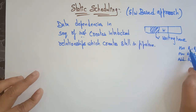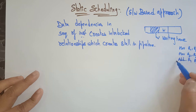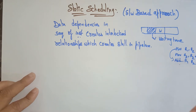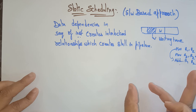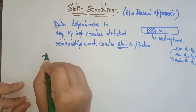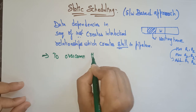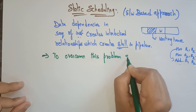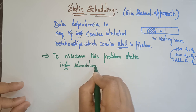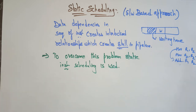Because R2 is being moved into R1, and again R2 is used in the next instruction, after completion of the first instruction only can the next be executed. There is a dependency relationship between instructions. A data dependency in the sequence of instructions creates an interlocked relationship which creates a stall — a gap in the pipeline. To overcome this problem, static instruction scheduling is used.